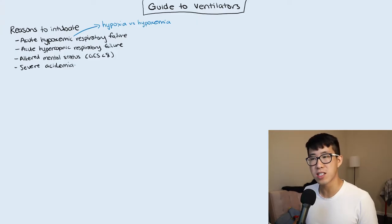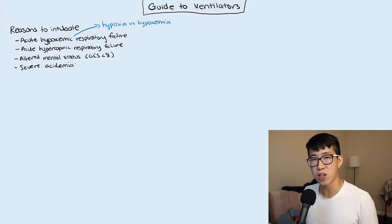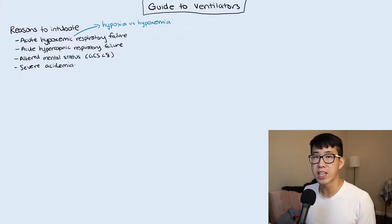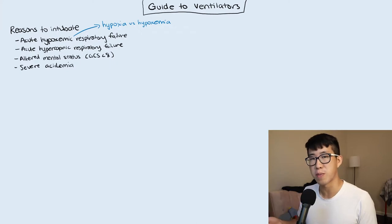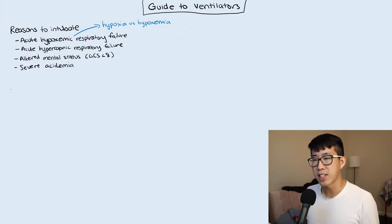Severe acidemia is another indication. It may take some time to reverse, and patients are going to be very tachypneic trying to blow off that acidemia — similar to COPD patients, they can tire out if you don't give them proper support. Now your patient is ventilated, so let's talk about some ventilator basics.